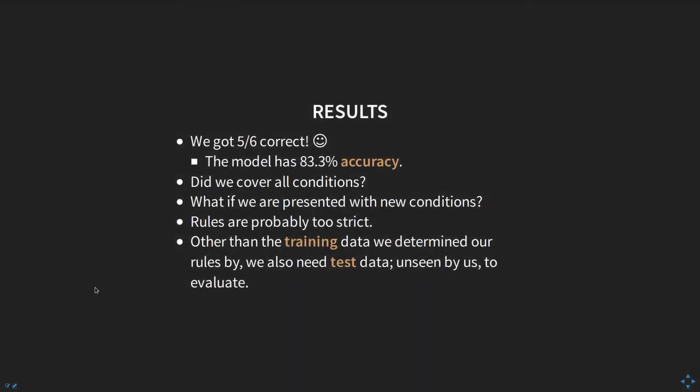Five out of six correct gives us 83.3% accuracy. In data mining, accuracy measures what percentage of targets we predict correctly. However, we also have to consider whether we covered all conditions correctly and how the rules would perform on new data. The rules are probably too strict — only one rule, and in any other case we predict something different.